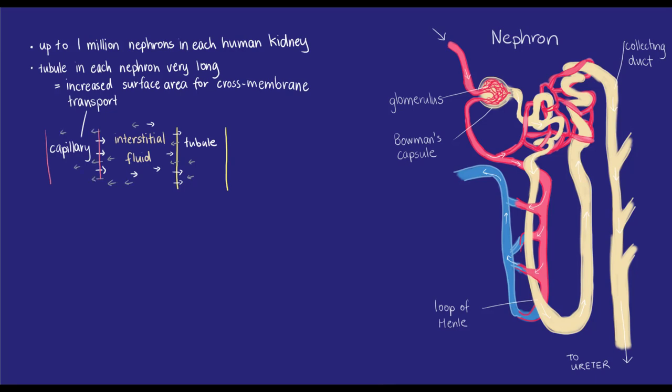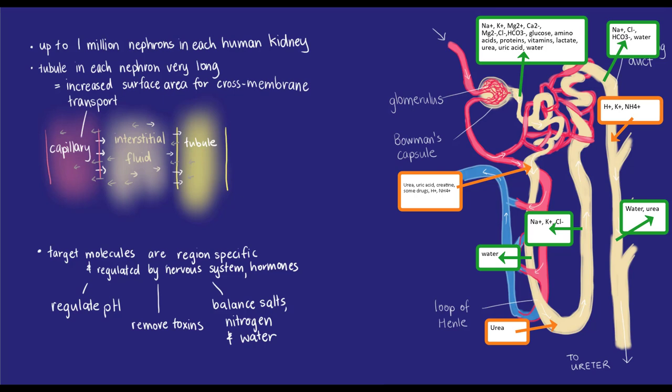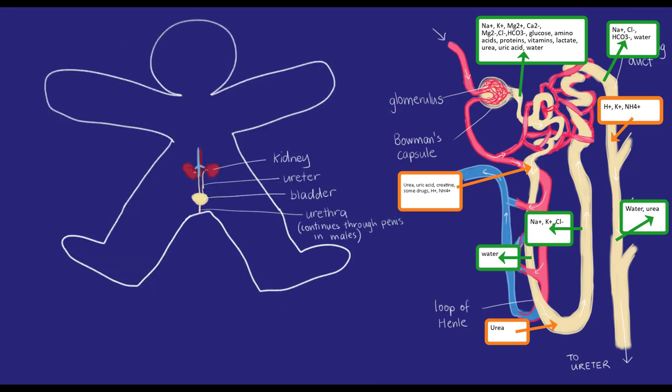Different components of the specialized structure, as well as signals from the nervous system and hormones, regulate what the nephron returns to the blood and what it collects. The cells in the tubule regulate the pH, extract toxins, and manage salt and water levels for the blood by some active and some passive transport.